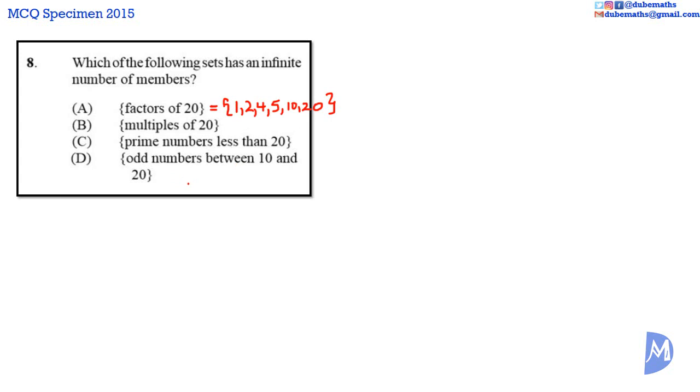Is it B? The set of multiples of 20 is equal to the set of 20, 40, 60, 80, 100, and this goes on indefinitely. Set B has an infinite number of members. The answer is B.